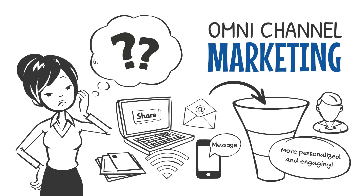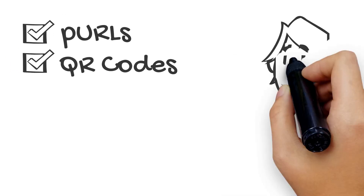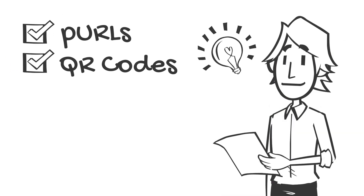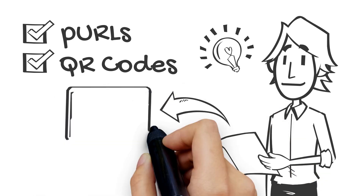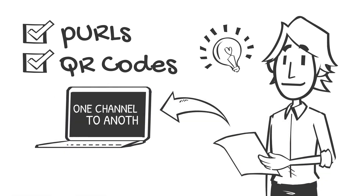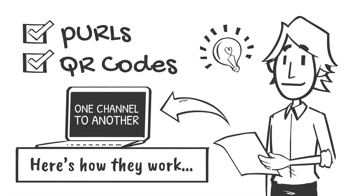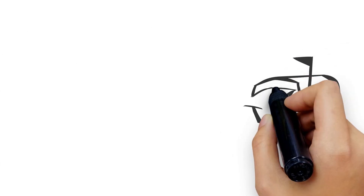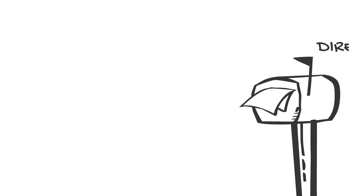are more personalized and engaging. PURLs and QR codes are one way to help connect users from one channel to another. Here's how they work. Let's start with a piece of direct mail — for example,